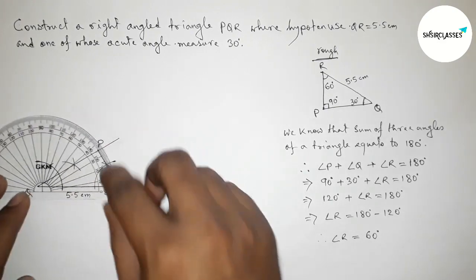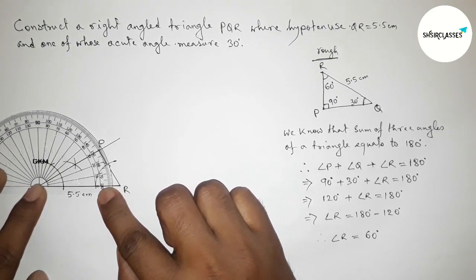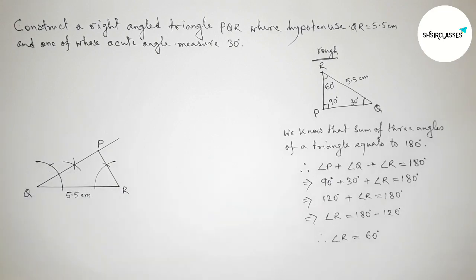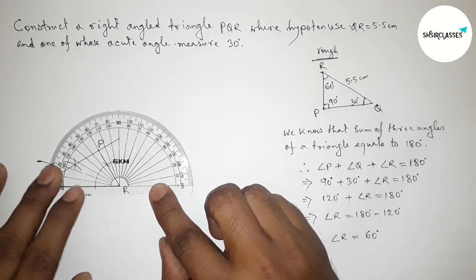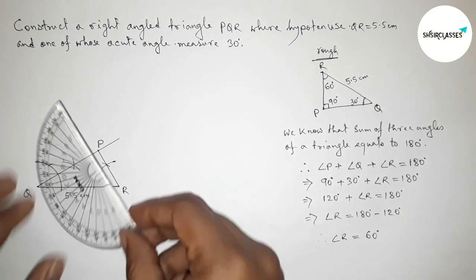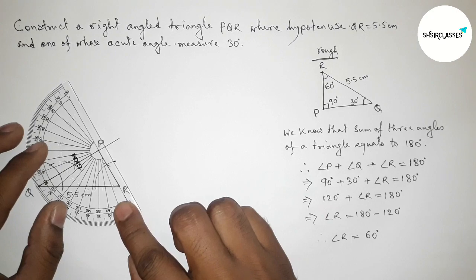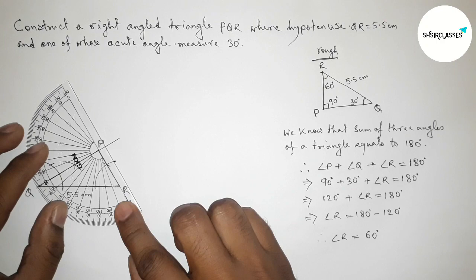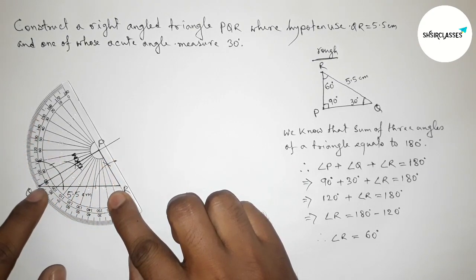Now checking angle Q with the help of a protractor — this is perfectly a 30 degree angle. Now checking angle R with the help of a protractor — this is also perfectly 60 degrees. Now lastly checking angle P whether it is 90 degrees or not — the angle P is also perfectly a 90 degree angle. This is perfectly 90 degrees.